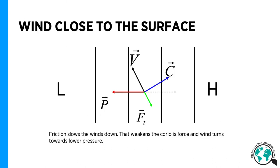Close to the surface, we need to take also the friction force into account. Friction is caused by the roughness of the surface. The friction slows down the flow. As the Coriolis force is dependent on the velocity of the flow, this weakens the Coriolis force and turns the flow towards the lower pressure.